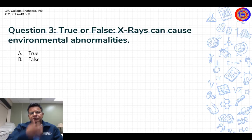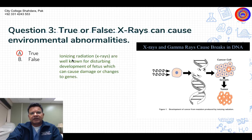Question number three: True or false — X-rays can cause environmental abnormalities. That is true. Ionizing radiation, that is X-rays, are well known for disturbing the development of the fetus, which can cause damage or changes to genes.